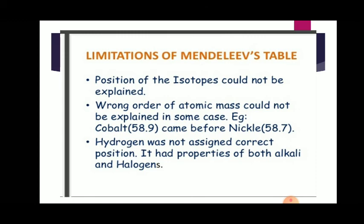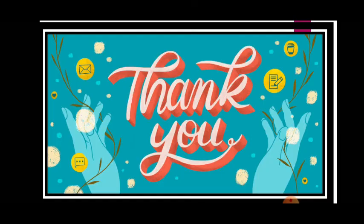Hydrogen was not assigned its correct position; it had properties of both alkali metals and halogens. In the first group hydrogen is there, but hydrogen's properties are not similar to the others — he did not explain about hydrogen correctly. These are the limitations of Mendeleev's periodic table. Today, the topic of Mendeleev's periodic table is completed. If you have any doubt you can ask me any time. Today you have to write all these points in your chemistry notebook. Tomorrow we will learn the next point. Thank you everyone.